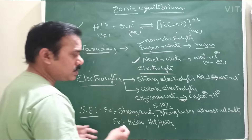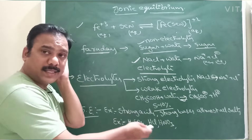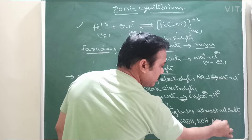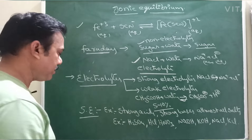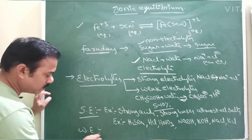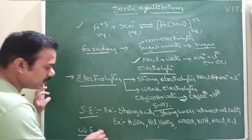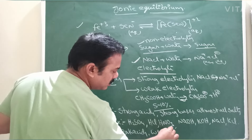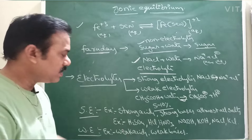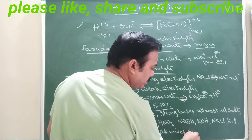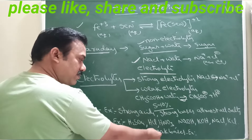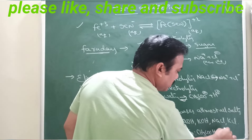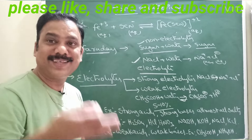Examples of weak electrolytes: weak acids and weak bases are treated as weak electrolytes. Examples of weak acids: CH₃COOH, H₂S, HCN, H₂CO₃. Examples of weak bases: NH₄OH. These are the main categories — electrolytes divided into strong electrolytes and weak electrolytes.